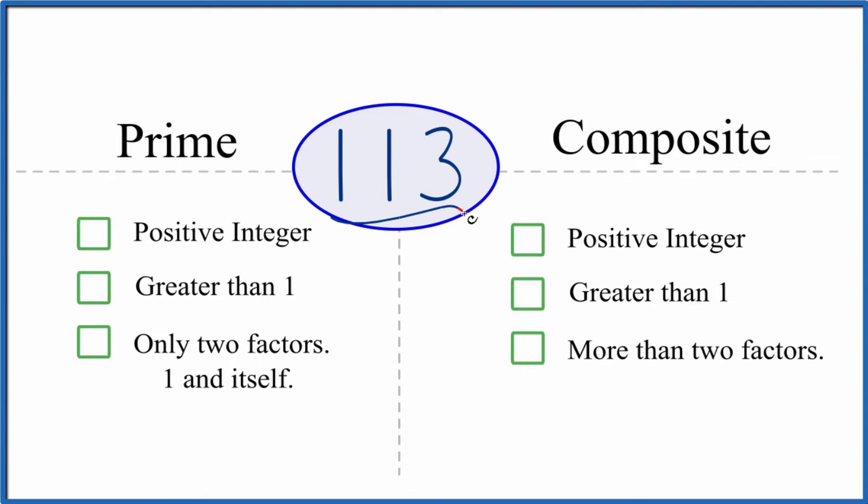If you're asked to determine whether 113 is prime or composite, here's how you can do that. Let's look first at whether 113 is a prime number.